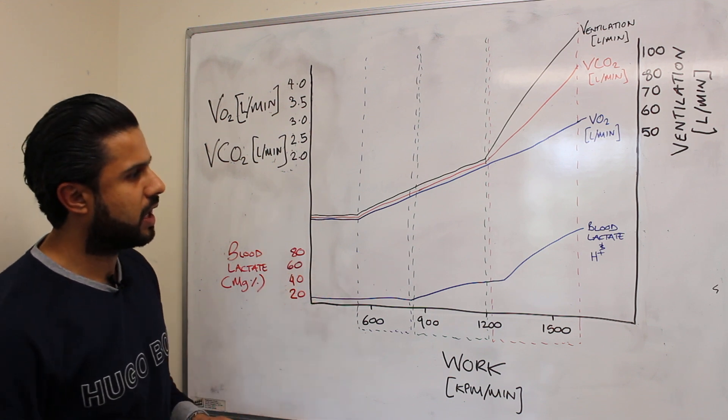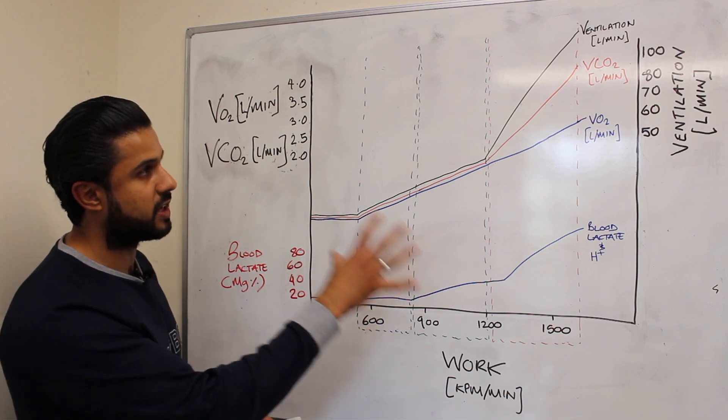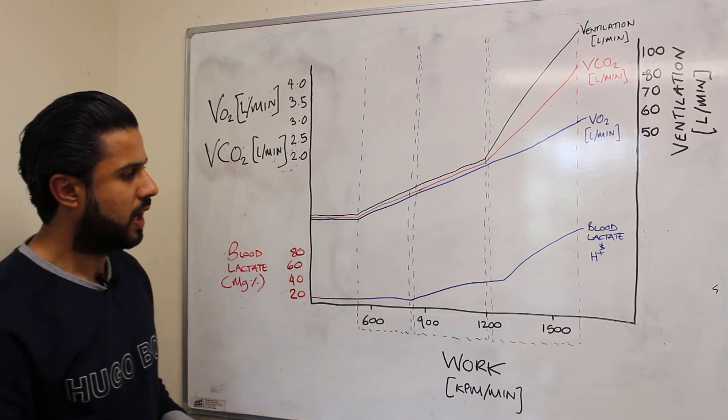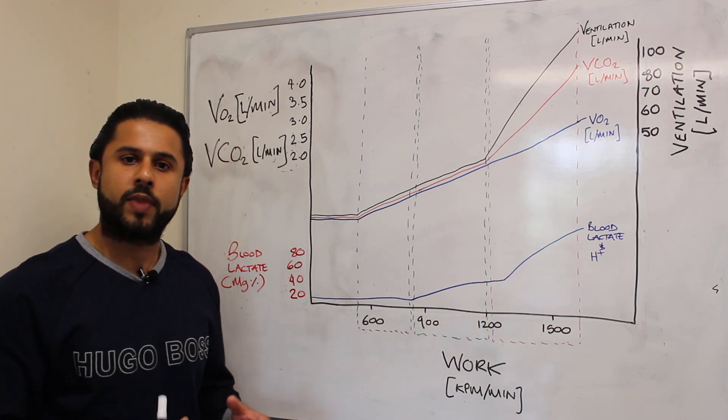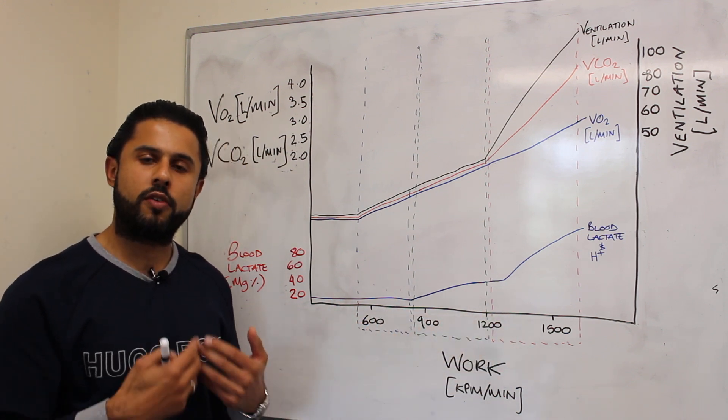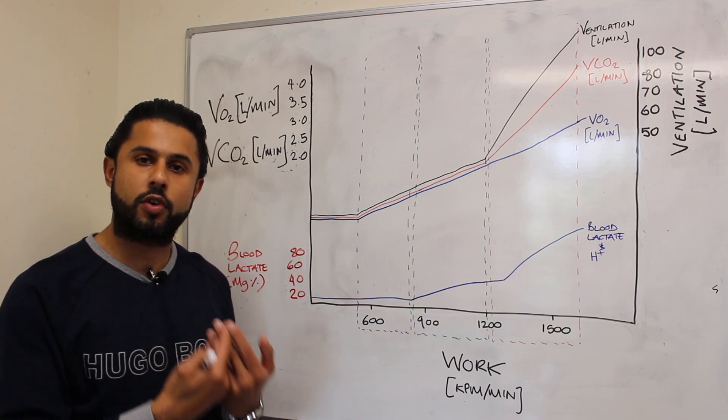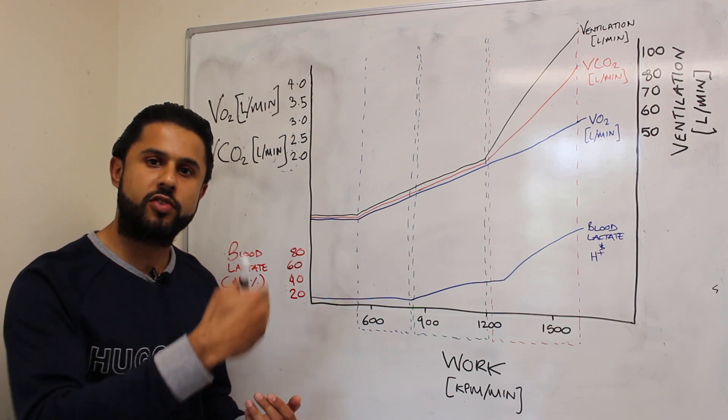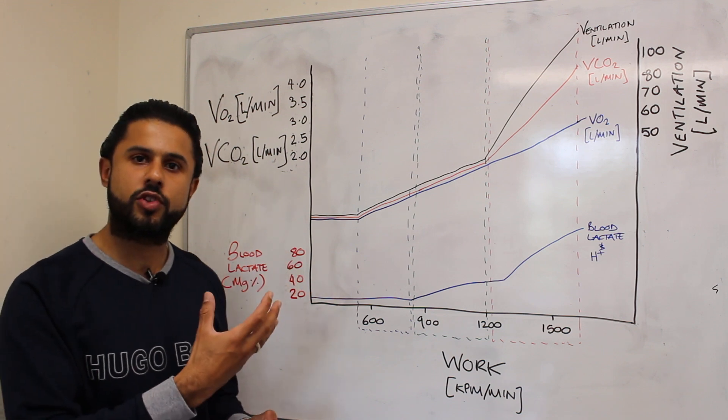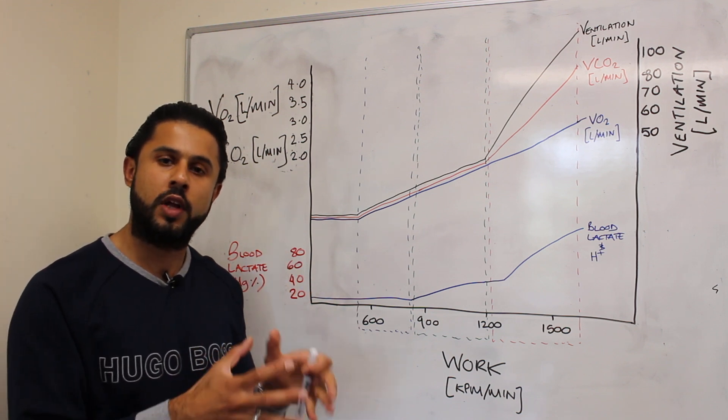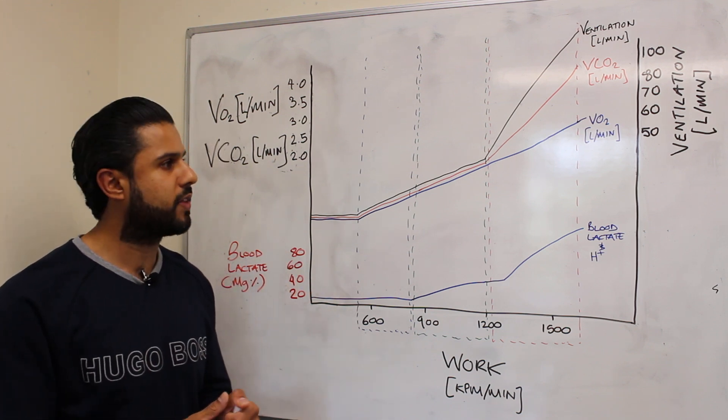What I've got on the whiteboard here is some data sets which I'll explain in just a moment and also various different exercise intensities. We're going to use an example of an athlete who's gone out for a run and he's going to be changing his intensity during the run and we will see how the ventilation changes and how it's related to the energy requirements of the exercise.